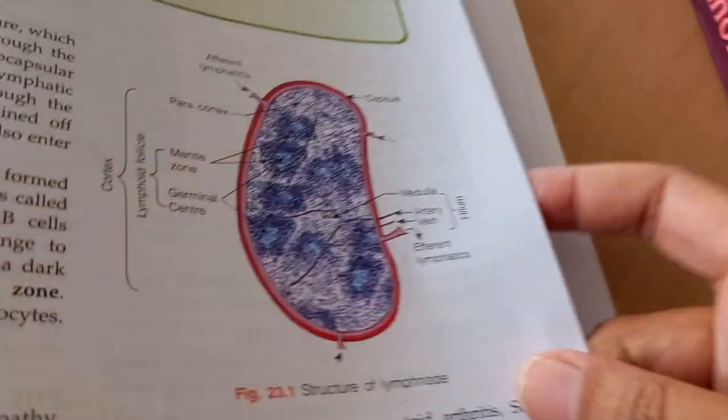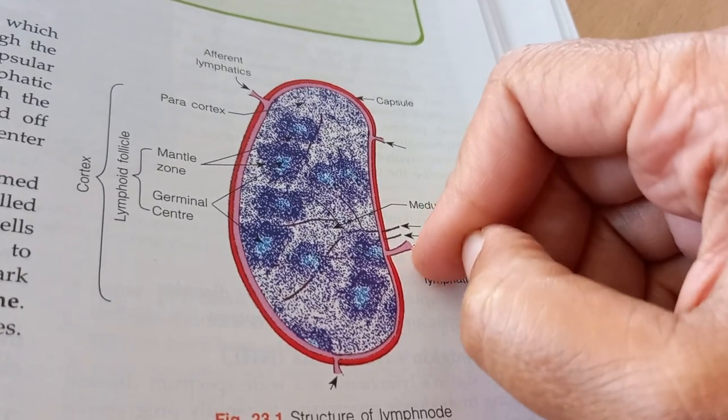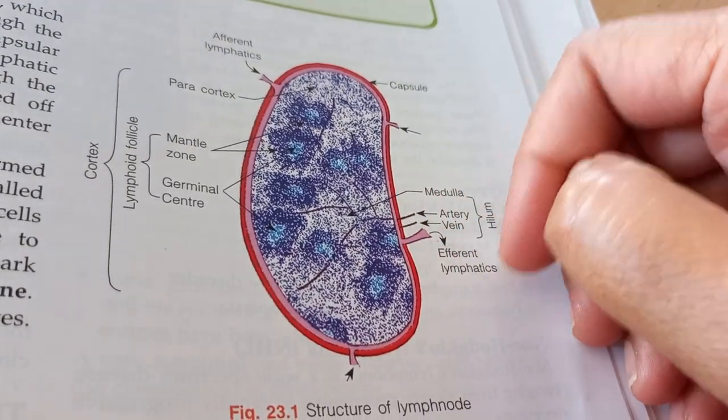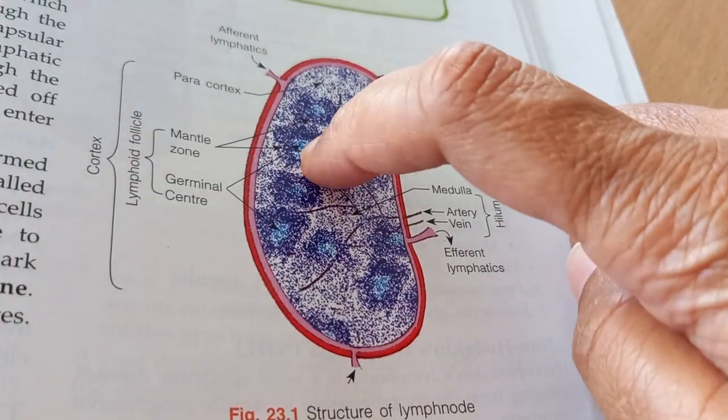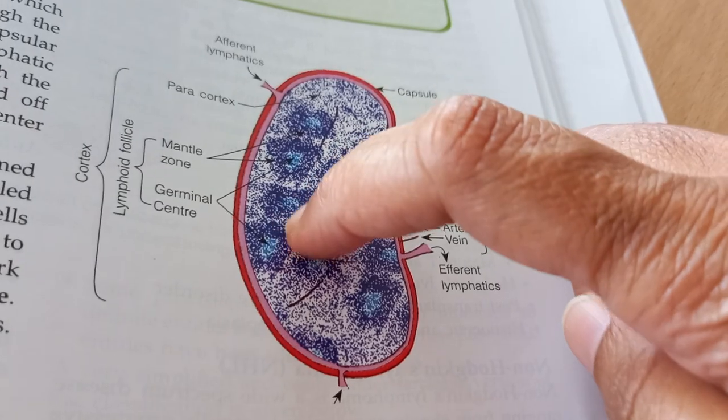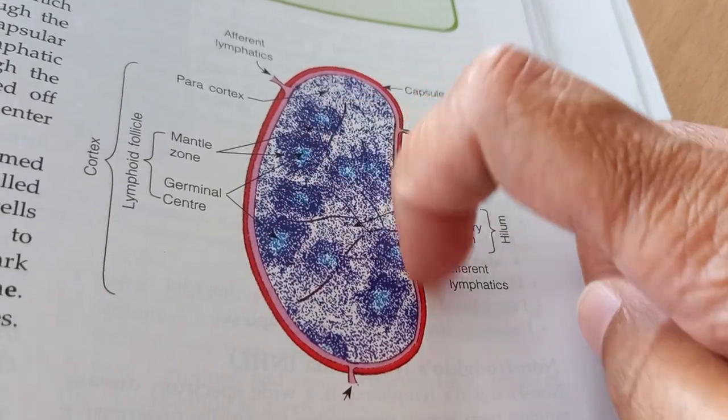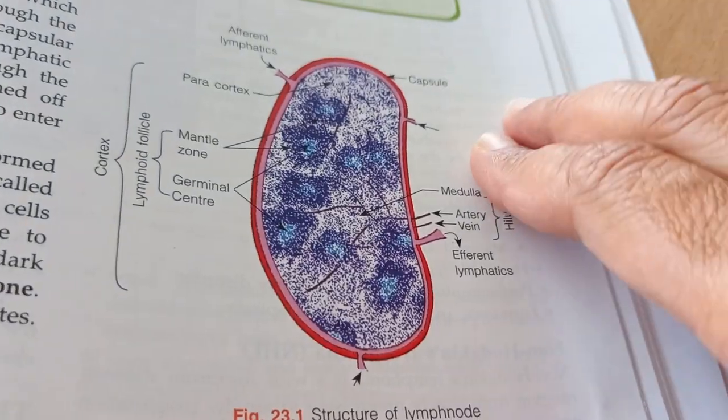Let's look at some images and try to understand what is the structure of lymph node. Look at that. There is something here from which the efferent lymphatics goes. Where does it enter from? Afferent lymphatics, efferent lymphatics. And here you have all these things which are called germinal centers and lymphoid follicles. And the entire thing is called the cortex, and this is the capsule. Lymph node.